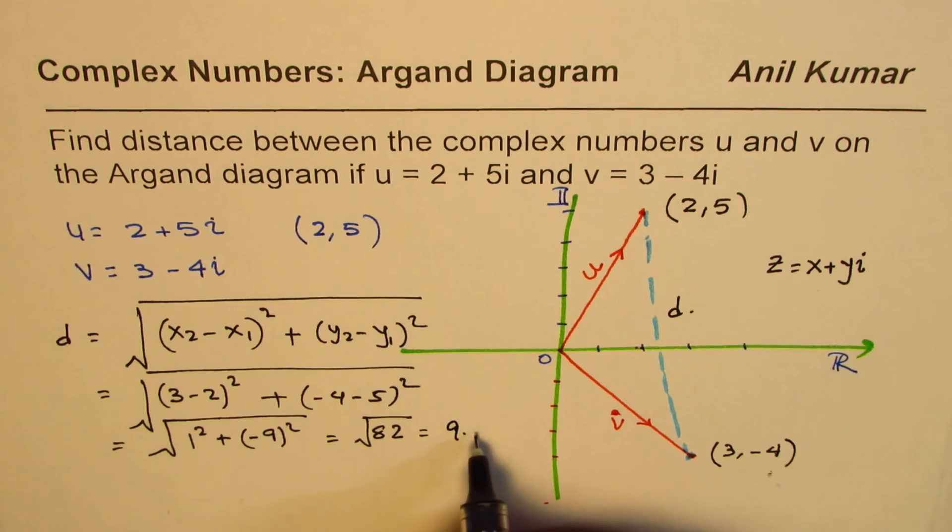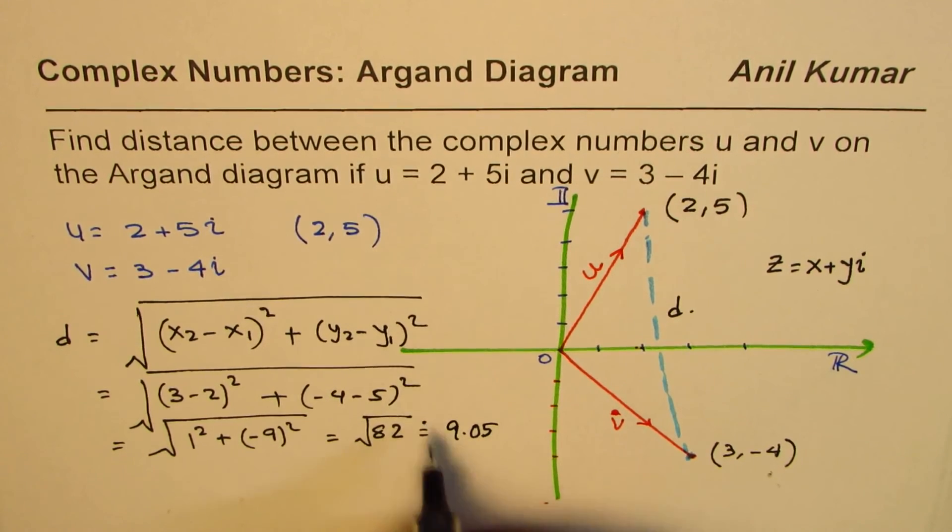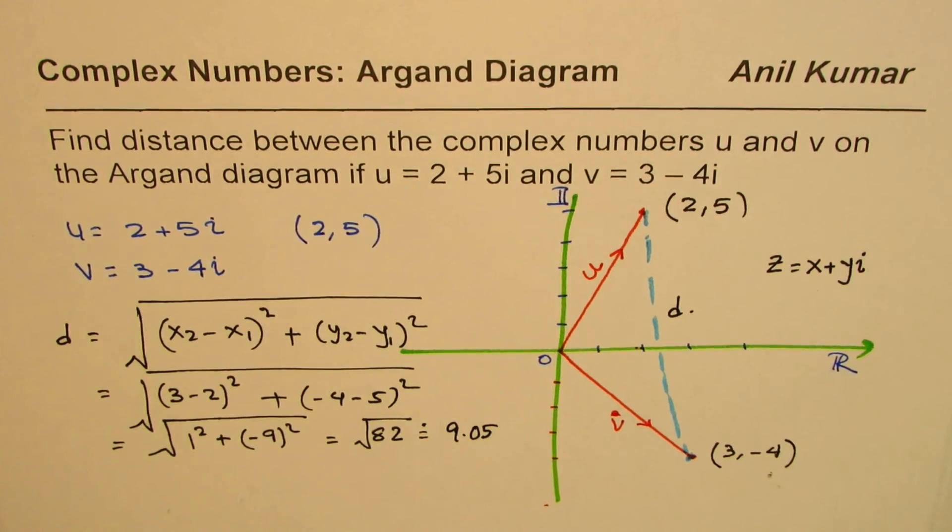So approximately 9.05 units. That becomes the distance between these two points represented by complex numbers on Argand diagram. I hope this video helps you to understand the very basic concept of finding the distance between the points. I'm Anil Kumar. You can always share and subscribe my videos and prepare for your own test. Thank you and all the best.